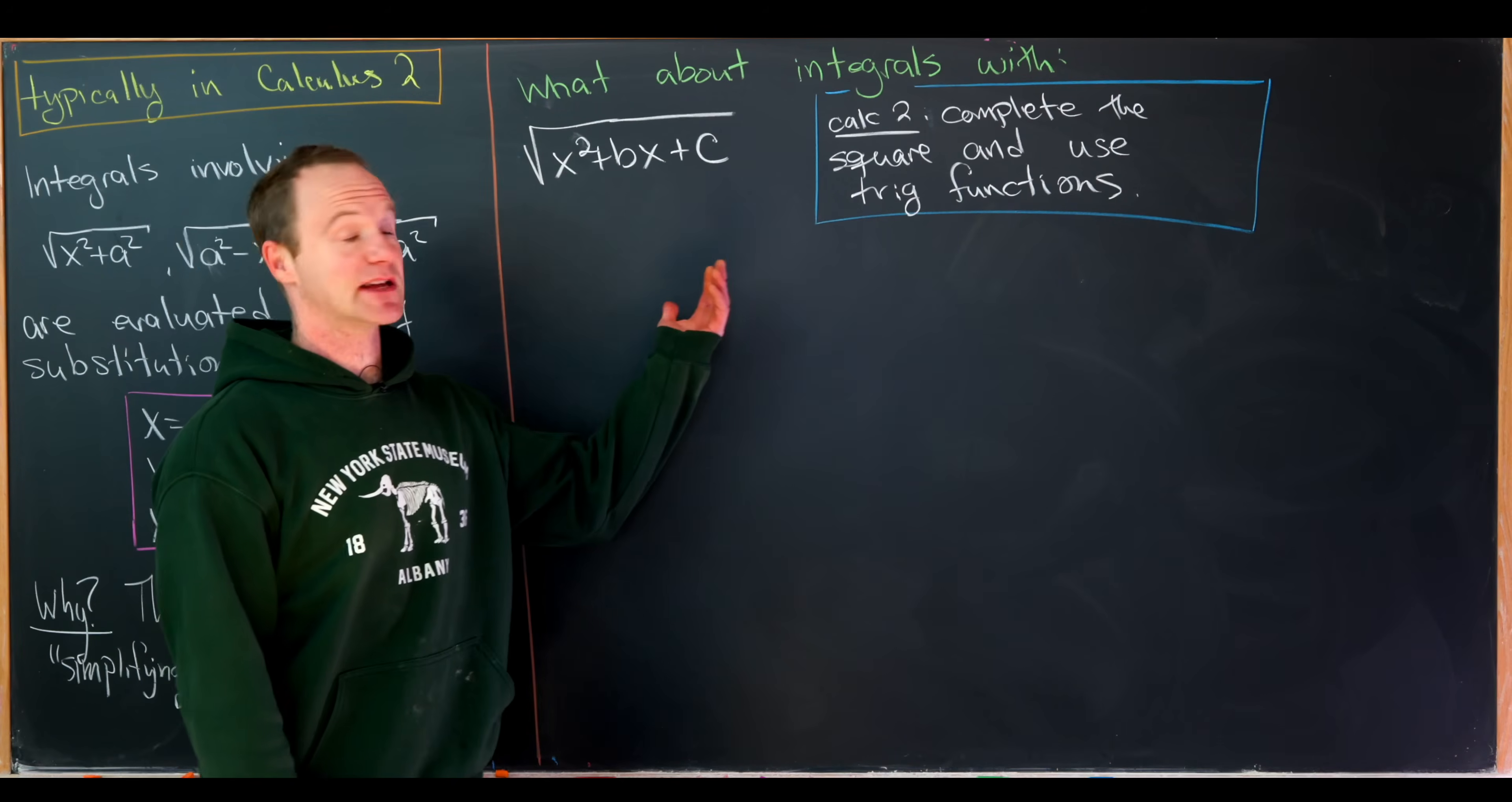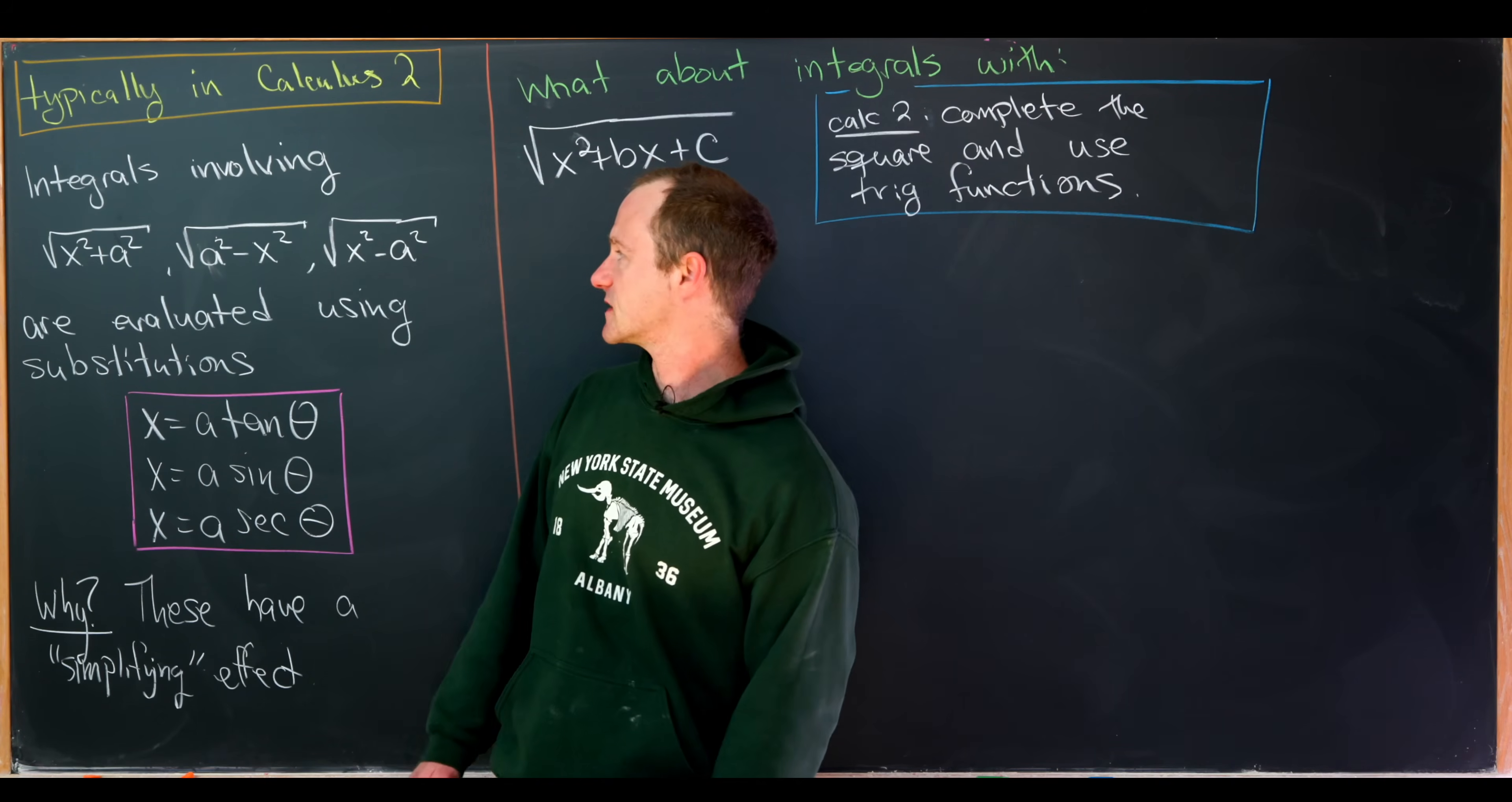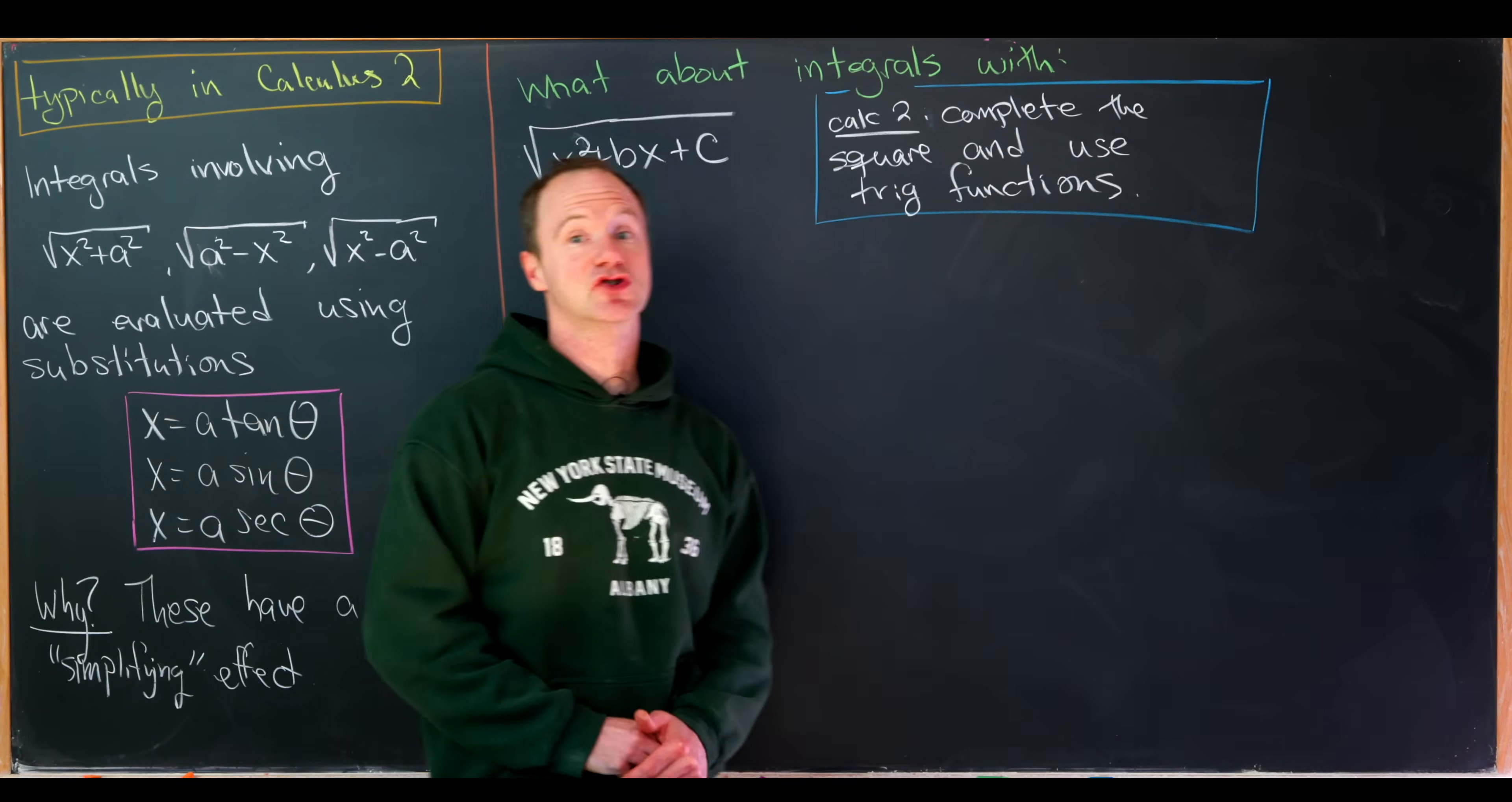Well, in that case, in Calculus 2, you're generally taught to complete the square and then use trig functions just like before. So in essence, completing the square turns it into one of these. And then you can do a substitution and then substitute finally for the trig function.